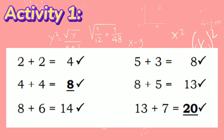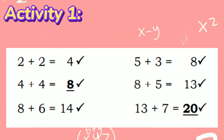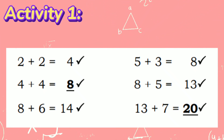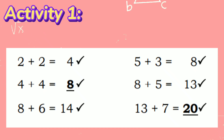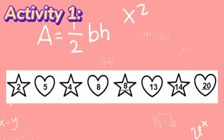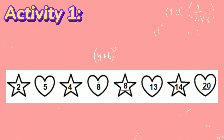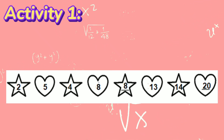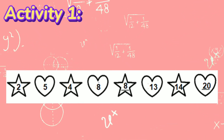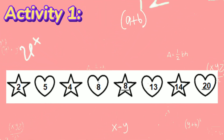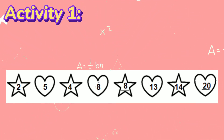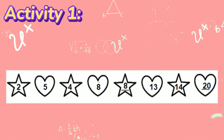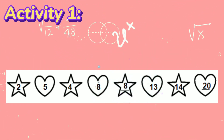Make sure to check the pattern if it is true or correct to the whole number sequence. Let us proceed to Step 3: determine and write the missing terms. After checking if the pattern is true up to the last number, you can now determine the missing terms. The two missing terms are 8 and 20.